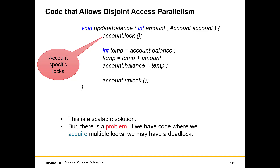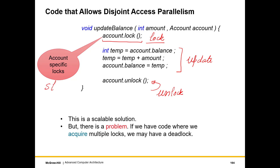Here is a piece of code which is far more scalable in the sense that disjoint access parallelism is allowed. This is the same code but instead of having one global lock address, we have a lock address associated with each account. We lock that, proceed to do the account update, and then unlock. We have account-specific locks. This does increase the memory footprint — previously we had one lock, now with 10,000 accounts we have 10,000 locks. Nonetheless this is a very scalable solution, though there are still problems.